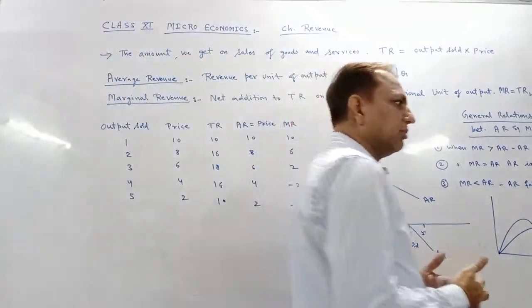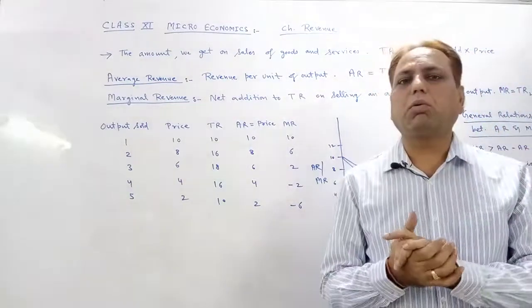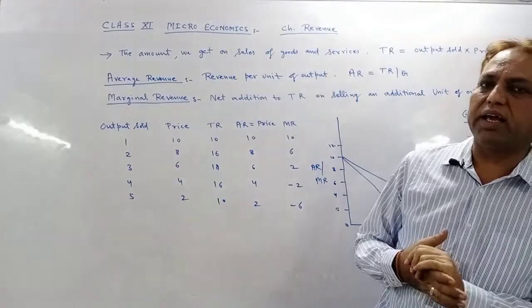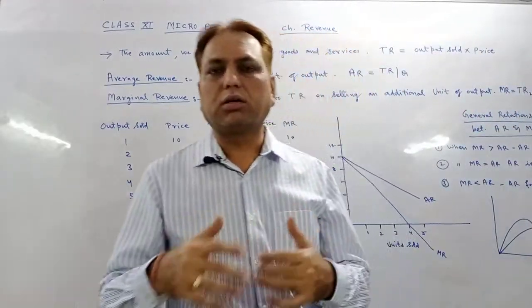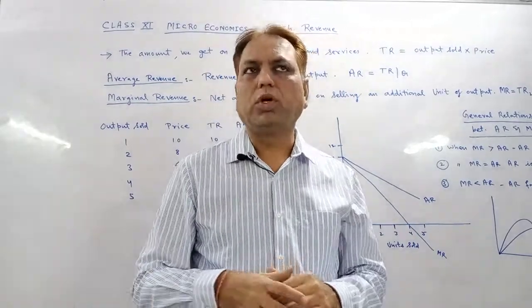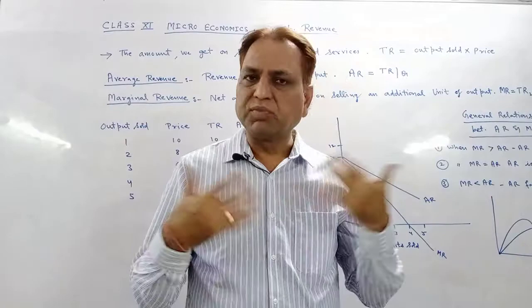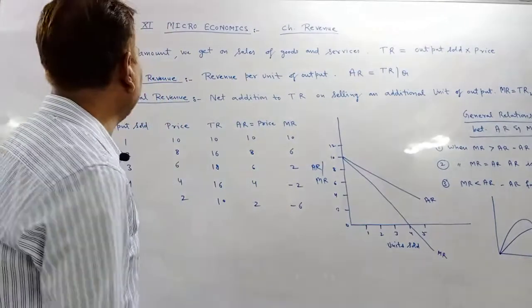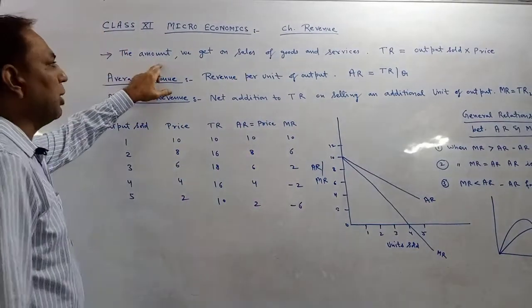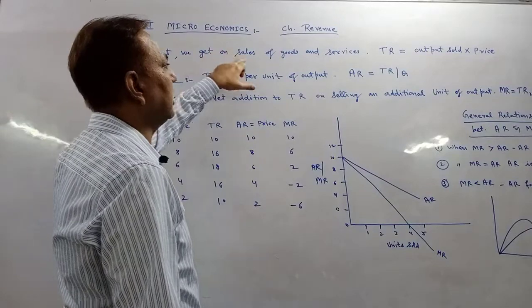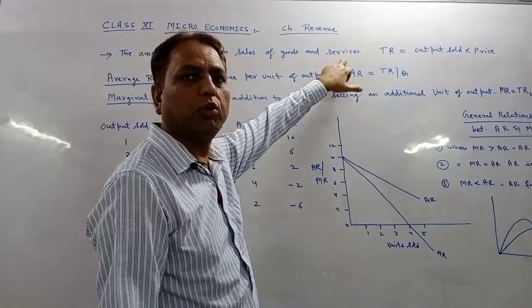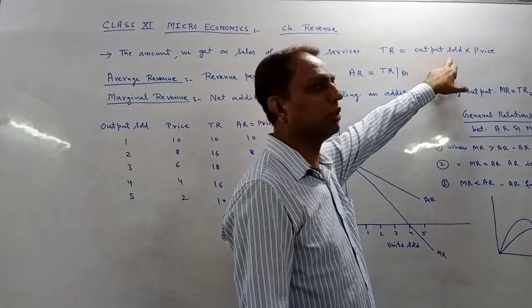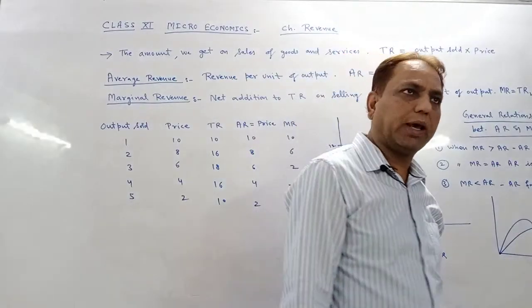That is very easy to understand. If I am selling 10 units of my product and the price is 20 rupees, then 20 into 10 — 200 is my total revenue. Revenue is not very hard; it is simply a mathematical concept. The definition: the amount we get on sales of goods and services is revenue or total revenue. The formula is: Total Revenue equals output sold into price per unit.